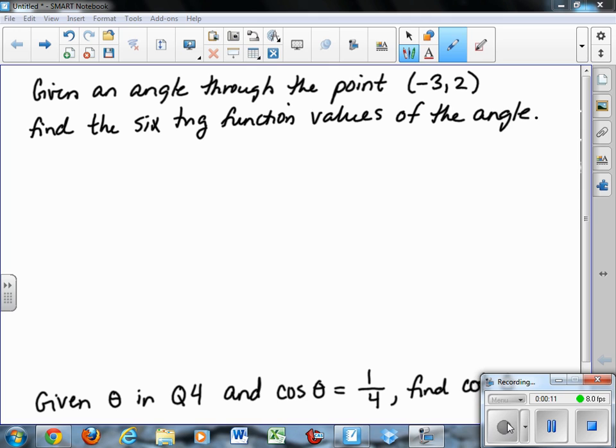given an angle through the point (-3, 2), and to clarify that, an angle in standard position with its terminal side through the point (-3, 2), find the six trig function values of the angle.